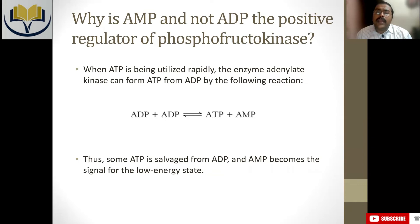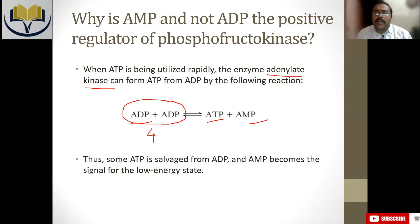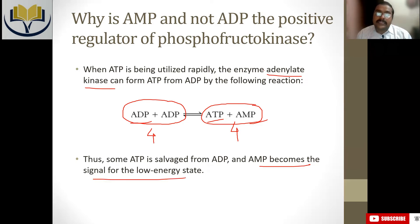Why does AMP act as the regulator rather than ADP? The equation is controlled by adenylate kinase, an enzyme that converts ADP into ATP and AMP. Two adenosine diphosphate molecules combine to form one adenosine triphosphate and one adenosine monophosphate — a rearrangement where ATP can be salvaged from ADP. That is why AMP becomes a signal for a low energy state, not ADP.